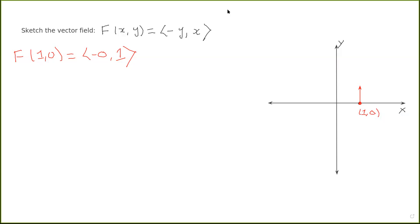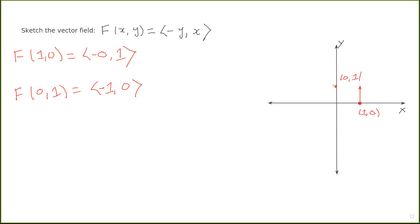Now I'll move to y = 1 and x = 0, so the point (0, 1). f(0, 1): the first component is minus y, so minus one; the second component is x, which is zero. So at the point (0, 1) I draw the vector (-1, 0), which is a unit vector pointing to the left. This is not going to be at a perfect scale, but I'll do my best.